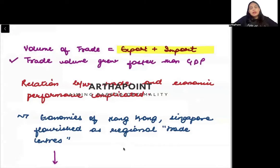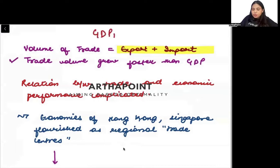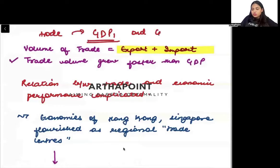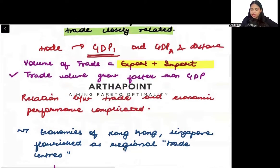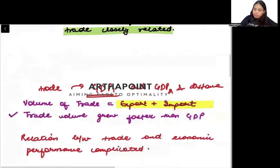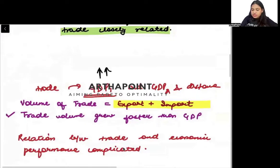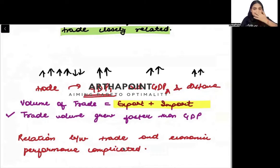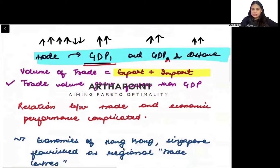In fact, there is an equation called the gravity equation in trade. It states that trade between two countries is affected by the GDP of the two countries and the distance between them. As GDP of country one increases, trade increases. As GDP of country two increases, trade increases. As the distance between countries increases, trade decreases. So there is a clear relationship between trade and GDP.